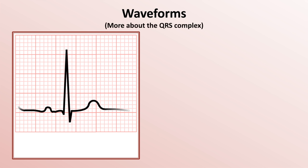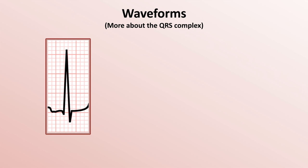A quick word more about the QRS complex. The complex can actually be broken down further into the upward or positive deflection known as the R-wave, the preceding downward or negative deflection known as the Q-wave, and the following negative deflection known as the S-wave. There are some conventions regarding labeling of the QRS complex of which you will need to be aware. You'll notice that in this example, the Q and S are written in lowercase while the R is in uppercase. That is not based on whether they are positive or negative, but rather whether they are subjectively large or small. In shorthand, one could label this complex as lowercase q, uppercase R, and lowercase s.